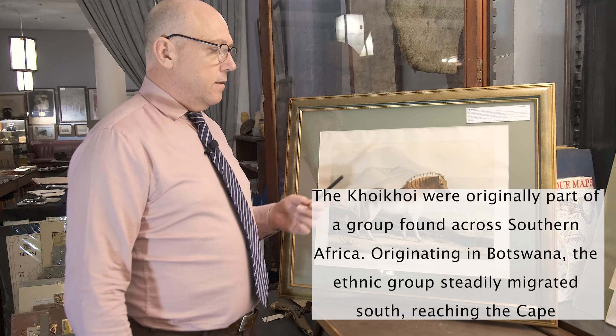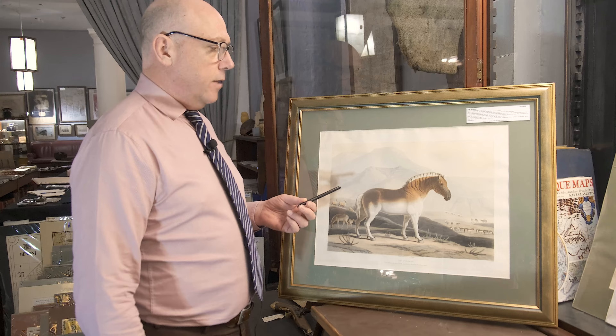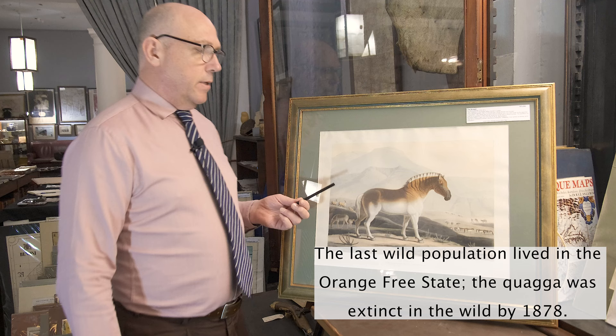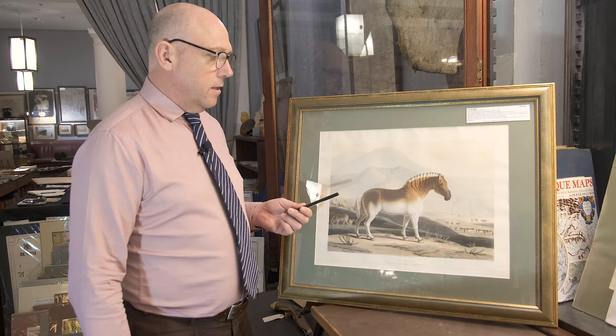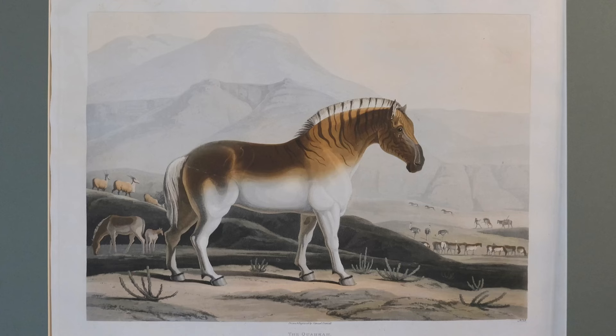This poor animal is from the zebra family, and it went extinct in the 1870s. What I really like about this image is that it's what's called the British naturalist style of painting, which is a very realistic style. So we have the quagga here in profile.